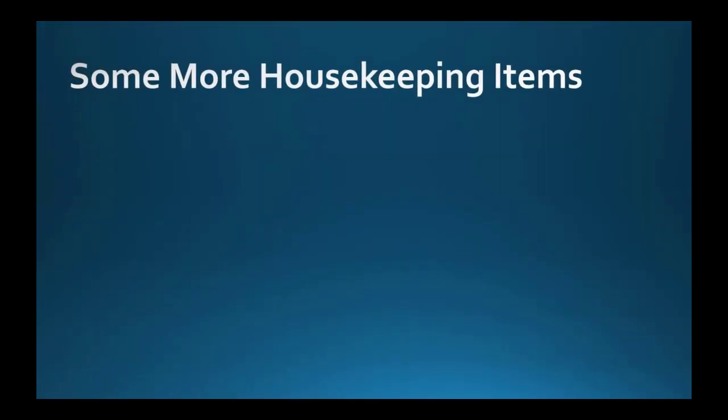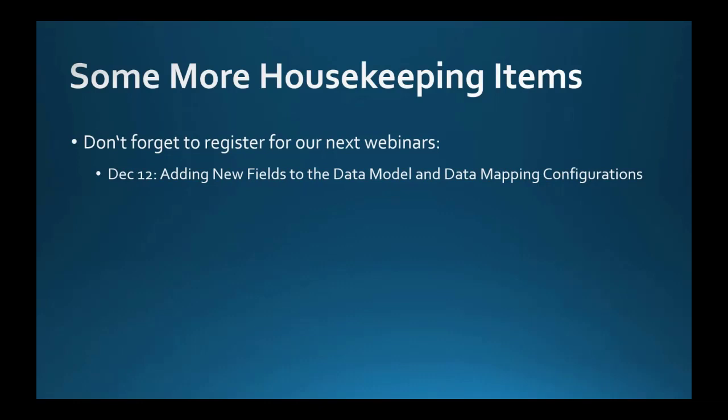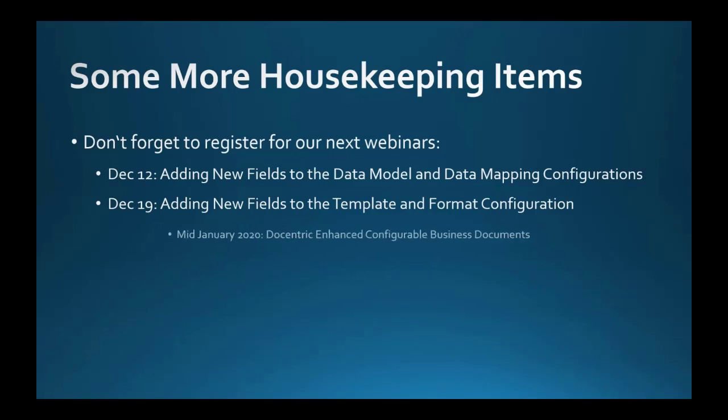Now I still have some housekeeping items to tell. Please don't forget also to register for our next webinars. On December 12th, we will take an existing data model configuration provided by Microsoft and add some data to it which is not present there yet. We will then also modify the data model mapping and map the new data fields to their data sources in the database. As a result, we will get a functional configuration which will be capable to provide data to the format configuration which we will do on December 19th. We will modify the format and format mapping. And we will also modify the report template in Excel so that it will contain the new data. We will see how to configure D365FO to use this new report and what print destination options we have available with configurable business documents. And then in the middle of January 2020, prepare for the icing on the cake because we will demonstrate our preview of the Docentric enhanced configurable business documents.